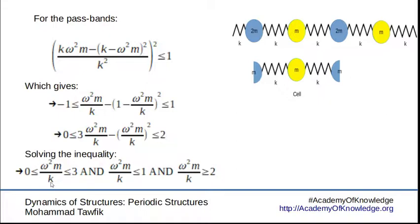The omega squared m over k is between 0 and 3 as two positive numbers. And we have two other conditions: omega squared m over k has to be less than 1, and omega squared m over k has to be greater than 2, which gives us two regions from 0 to 1 and from 2 to 3. So we got two pass bands. Let's use the same program we had last time, but now modify it for a 3 degree of freedom problem.